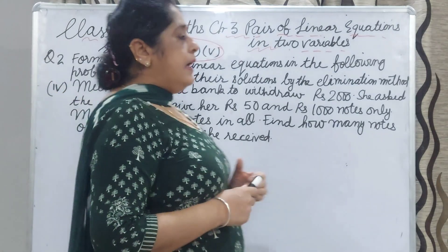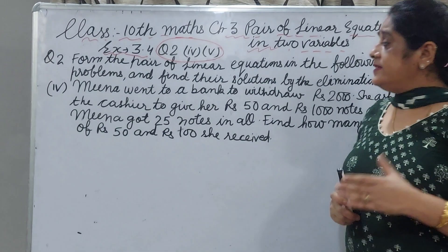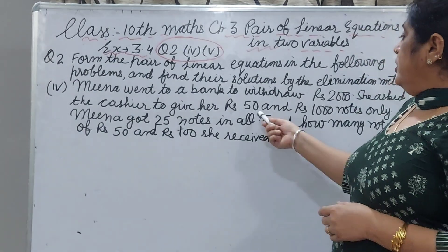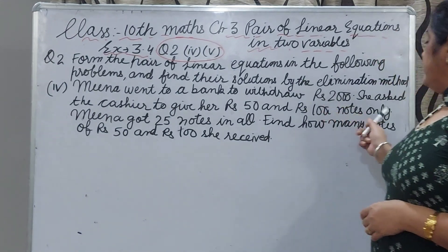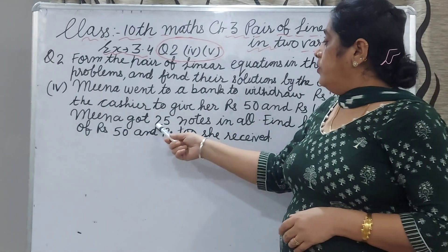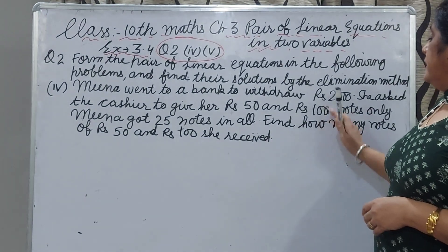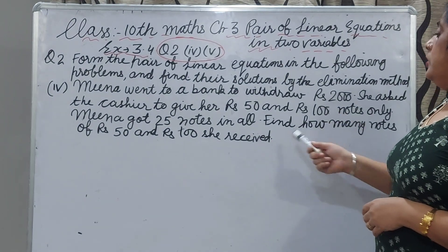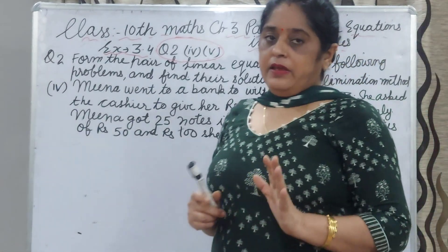Minoo went to a bank and withdrew rupees 2000. She asked the cashier to give her rupees 50 and rupees 100 notes only. Minoo got 25 notes in all. Find how many notes of 50 rupees and rupees 100 she received.